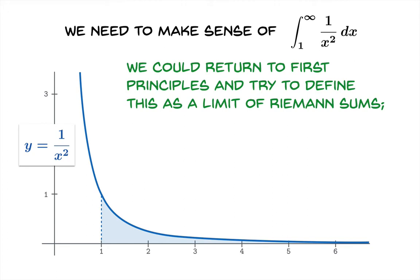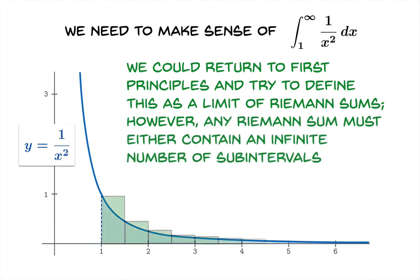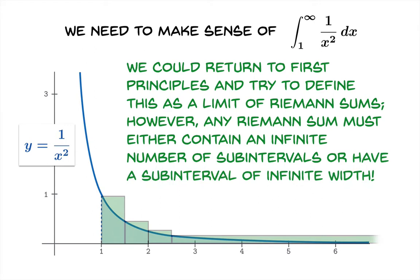Starting from first principles, we could try to think of this as a limit of Riemann sums. However, any Riemann sum must either contain an infinite number of subintervals — because you've chopped up this infinite interval into pieces of finite width — or if you choose a finite number of subintervals, you'll have to have a subinterval of infinite width. Either option is trouble. The second option leads to an infinite value for the Riemann sum, and the first requires the theory of infinite series to deal with — involving infinite collections of numbers that you try to add together. So this does not seem to be a promising route.